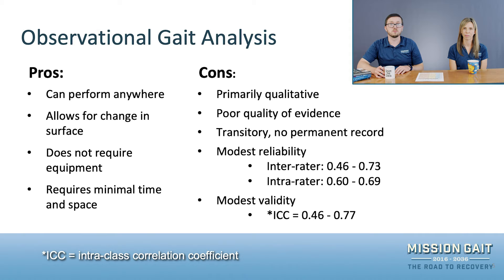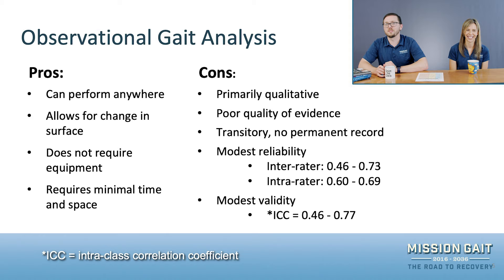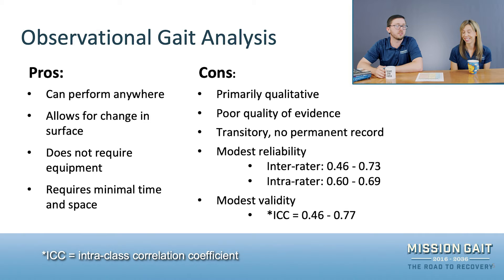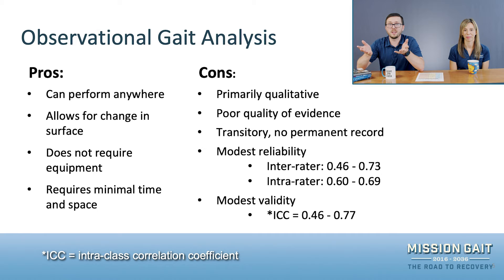Observational gait analysis has a lot of pros, but unfortunately also a lot of cons. On the pros side, it's so easy to perform anywhere — you can watch people walk in the airport while waiting for flights. You can do it on any surface, indoors or outdoors, and you don't need any equipment. It doesn't even take that much space. This could easily be done walking your patient from the waiting room back to the treatment area, so there's almost no excuse not to use this in your treatment.